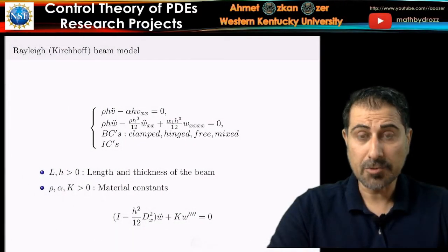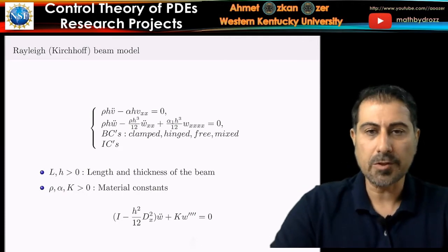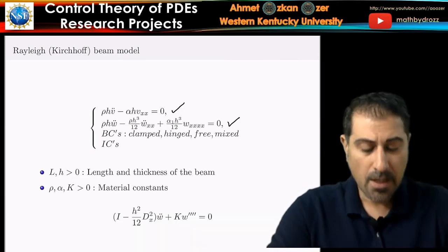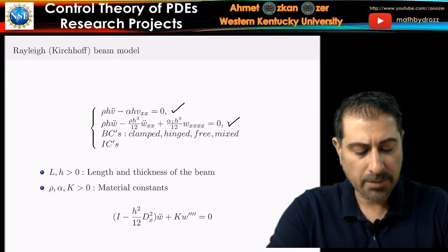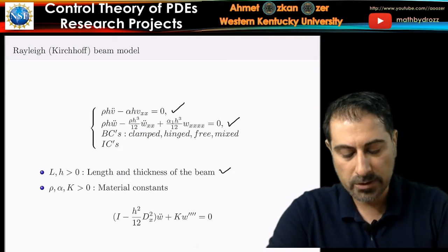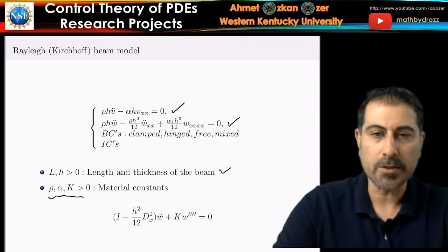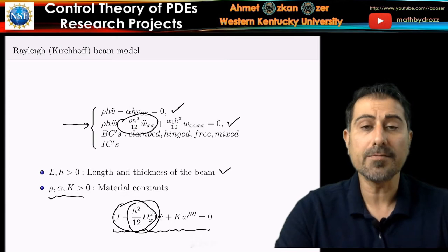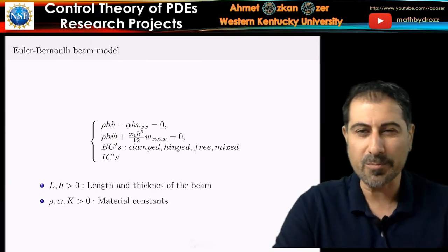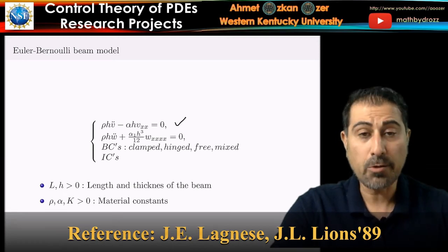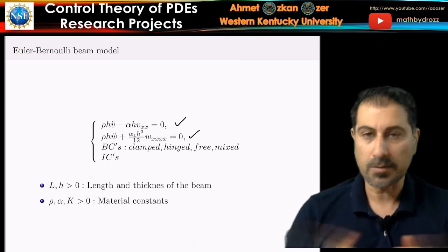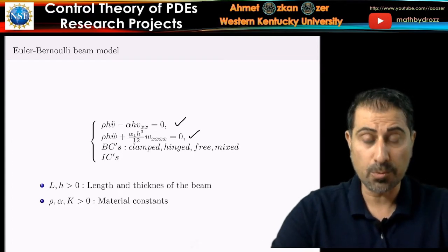The first model I'll introduce is the Rayleigh beam model. We have two decoupled equations: one for longitudinal displacement and one for bending-type motions, along with boundary conditions. L represents the length of the beam and H represents the thickness. All other constants are positive material constants. This model retains the rotational inertia term. If you remove that term, you get the Euler-Bernoulli beam model — a wave equation for longitudinal vibrations and an Euler-Bernoulli equation for bending, decoupled because we consider linear models.